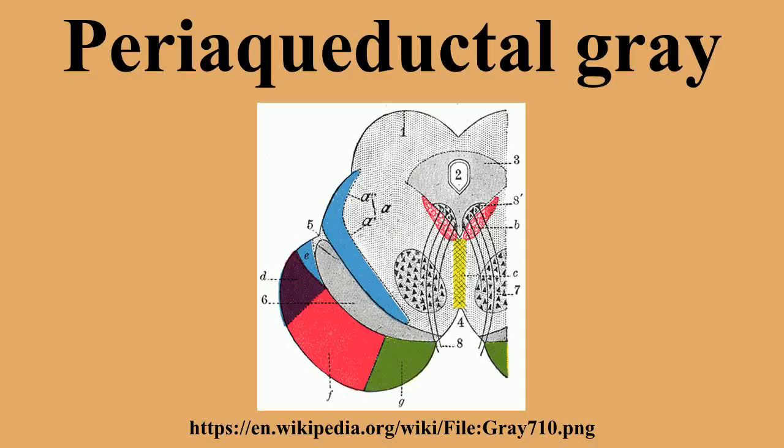The signal travels to the ventroposterolateral nucleus of the thalamus. The nociceptive signal was inhibited before it was able to reach the cortical areas that interpret the signal as pain. This is sometimes referred to as the gate control theory of pain and is supported by the fact that electrical stimulation of the PAG results in immediate and profound analgesia.